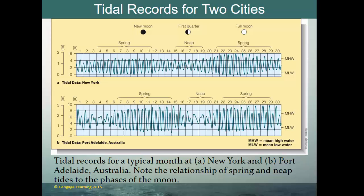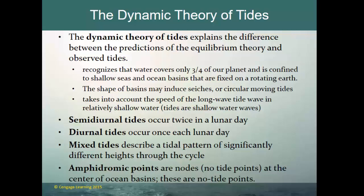The dynamic theory of tides explains the difference between equilibrium theory predictions and observed tides. It recognizes that water covers only three quarters of the planet and is confined to shallow seas and ocean basins on a rotating Earth. The shape of those basins may induce different types of tidal movements, including seiches — water sloshing back and forth — or circular moving tides. Tides are always shallow water waves. There are three basic types of tides: semi-diurnal, diurnal, and mixed tides.